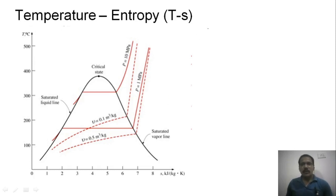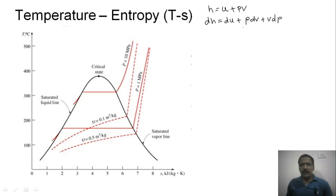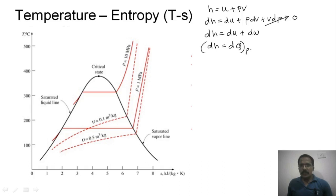Now we discuss how to calculate enthalpy and entropy. We know that enthalpy h is internal energy plus flow work. Differentiating: dh = du + p·dv + v·dp. For a constant pressure line, v·dp = 0, so dh = du + p·dv = dq. As per the first law of thermodynamics, dq = du + dw, so dh = dq at constant pressure.